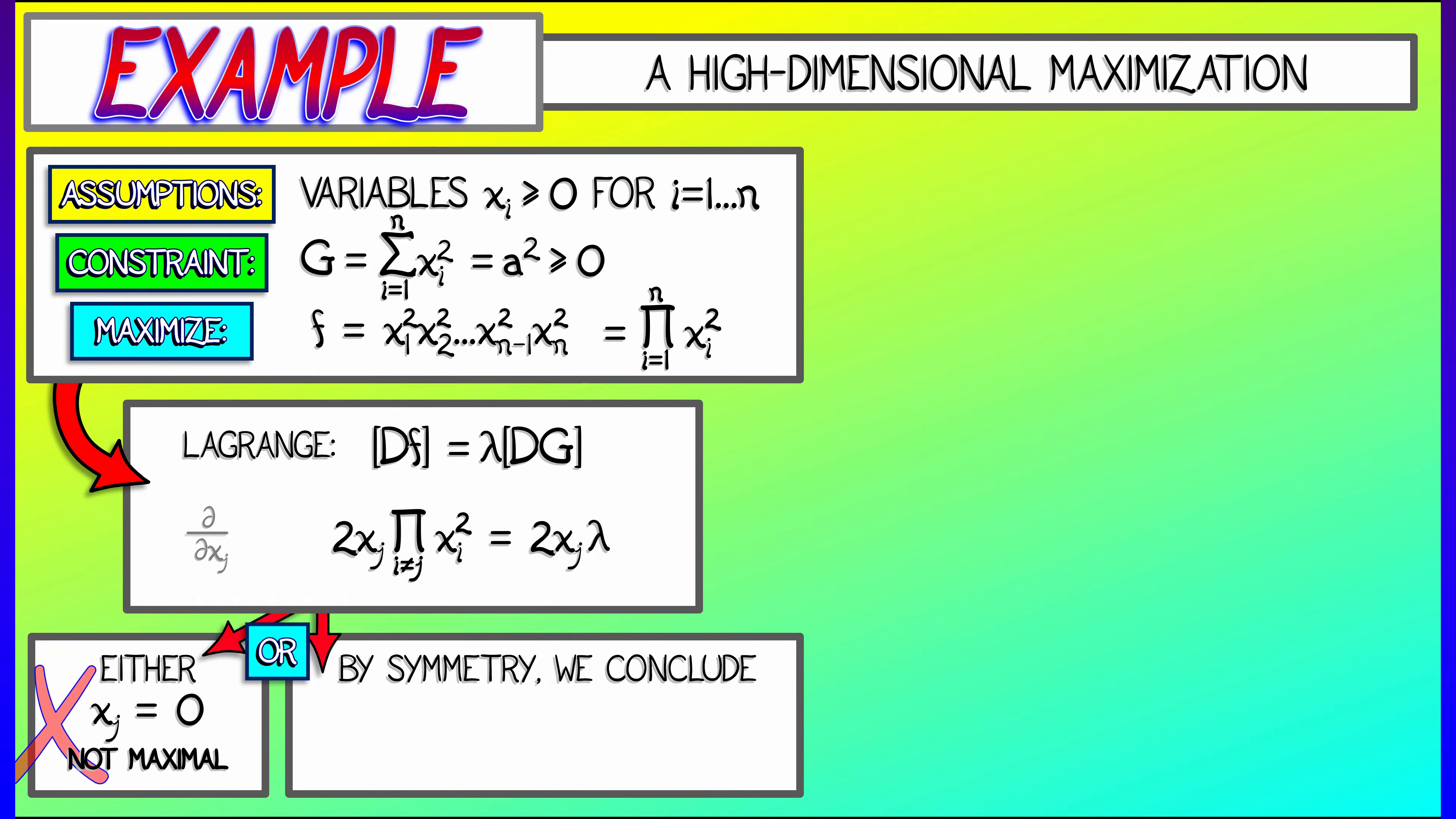or the other case, divide both sides by 2xj, and we get that lambda is equal to the product of xi squared for all i not equal to j for every single j. And that immense amount of symmetry means that the only critical point is going to happen when all the xj values are the same for every j.